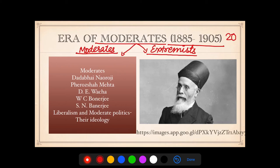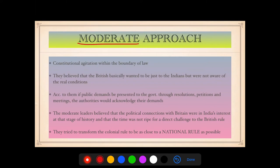Who were the Moderates? The Moderates included Dadabhai Naoroji, Ferozshah Mehta, D.E. Wacha, W.C. Bonnerji, and S.N. Banerjee. Their ideology was liberalism and moderate politics. Dadabhai Naoroji, pictured here, was president of the INC thrice.